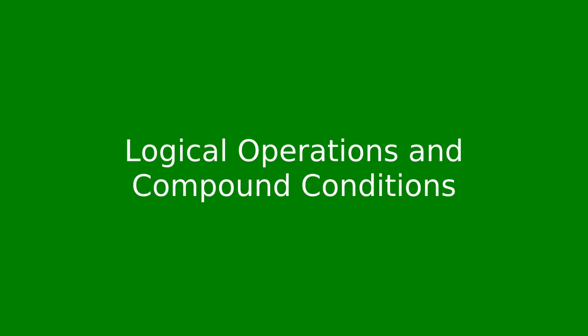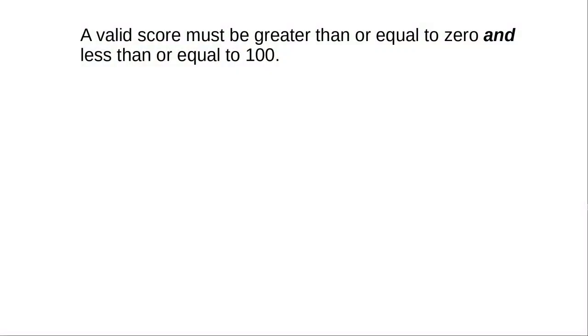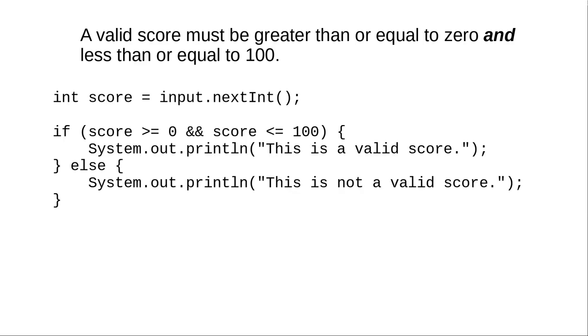Sometimes you need to test more than one condition at a time. For example, a valid score must be greater than or equal to zero and less than or equal to 100. Here's how you write that in Java. The AND is written with two ampersands in a row. For an AND to be true, both conditions must be true.